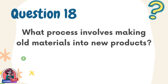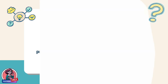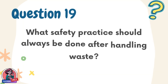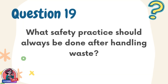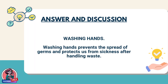Question 18. What process involves making old materials into new products? Answer: Recycling. Recycling turns waste materials into new products, reducing garbage and conserving resources. Question 19. What safety practice should always be done after handling waste? Answer: Washing hands. Washing hands prevents the spread of germs and protects us from sickness after handling waste.